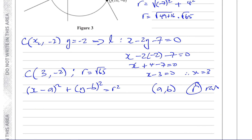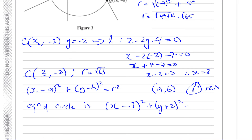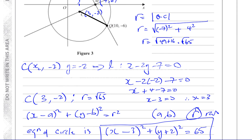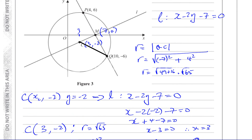The equation of the circle is (X − 3)² + (Y − (−2))² = 65, which simplifies to (X − 3)² + (Y + 2)² = 65. That is the equation of the circle, and the full question is complete.